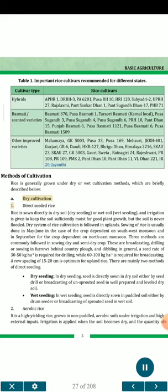Methods of cultivation: Rice is generally grown under dry or wet cultivation methods. In dry cultivation — direct seeded rice — rice is sown directly in dry soil (dry seeding) or wet soil (wet seeding), and irrigation is given to keep the soil sufficiently moist for good plant growth but the soil is never flooded. Dry system of rice cultivation is followed in uplands. Sowing is usually done in May-June for crops dependent on southwest monsoon and in September for crops dependent on northeast monsoon. A seed rate of 30 to 50 kg/ha is required for drilling, while 60 to 100 kg/ha is required for broadcasting. A row spacing of 15-20 cm is optimum for upland rice.